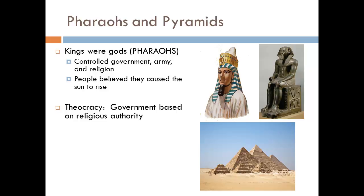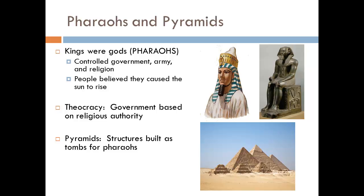These pharaohs built very elaborate tombs, often in the form of pyramids, especially in the Old Kingdom. The pyramids of Giza in Egypt are still standing thousands of years later. However, how the pyramids were built has caused a lot of historical debate — they were built without the use of a wheel, and many were completed in just over a decade. People try to figure out how these ancient people could build something this complex in such a short time without modern technology, especially since the blocks are perfectly cut.